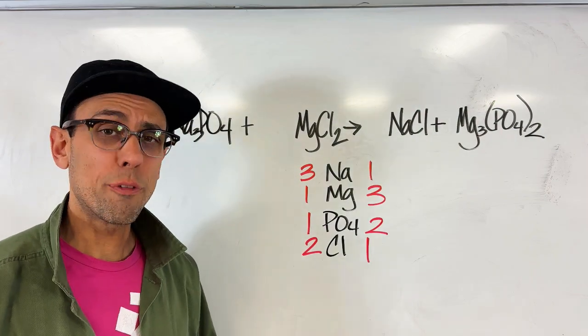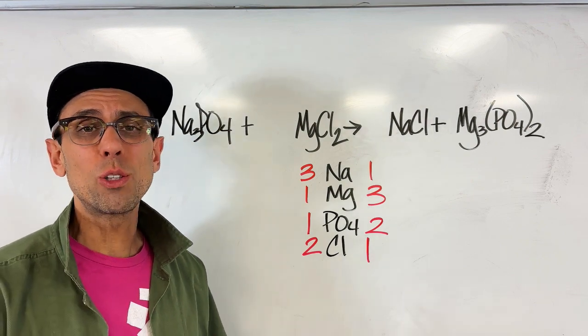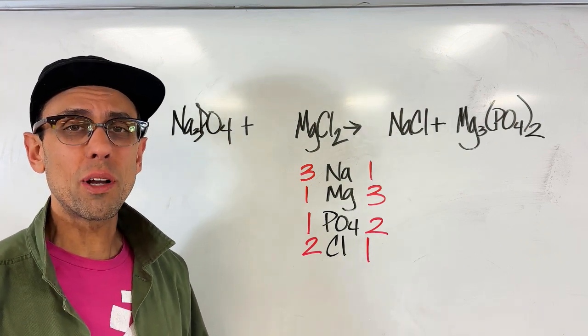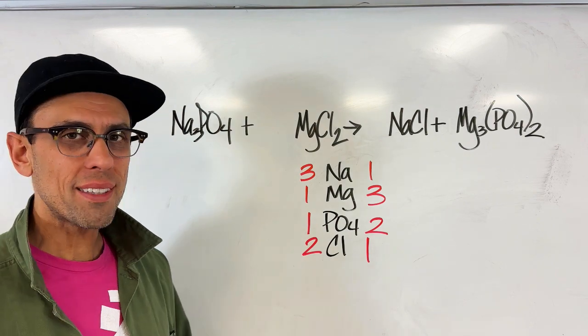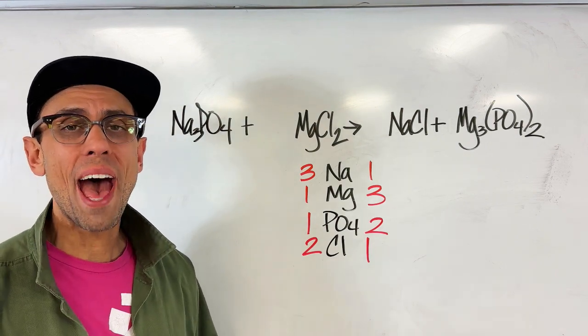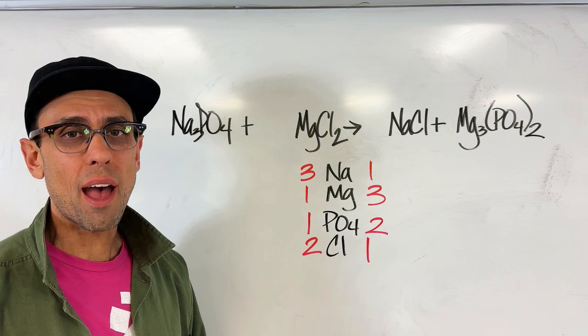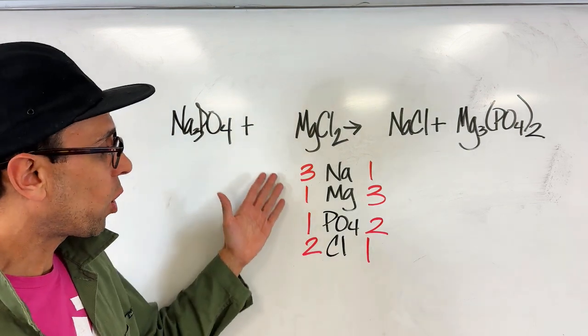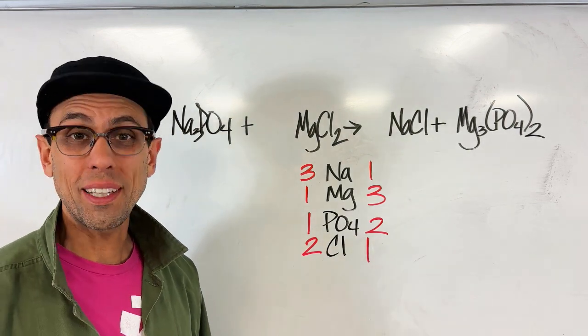So anytime we balance an equation, the first thing we want to do is separate our metals, our ions, our non-metals, etc. Make a chart something like this, and take stock of how many we have on the reactant side versus the product side. In doing so, you can see we've got a whole bunch of discrepancies here that we need to resolve.